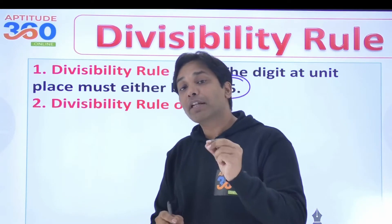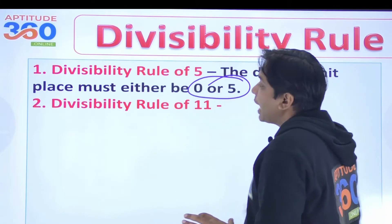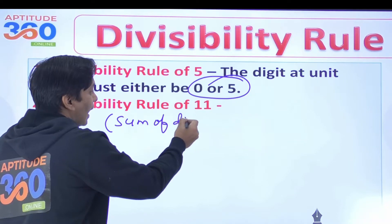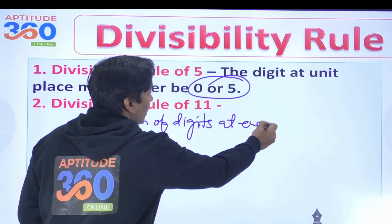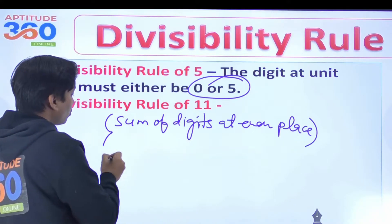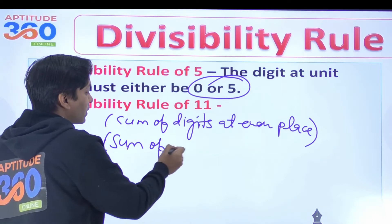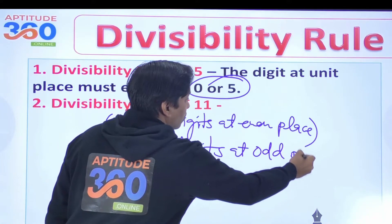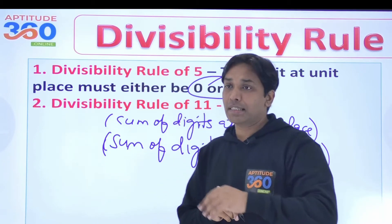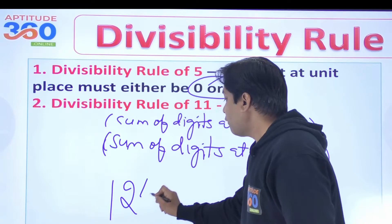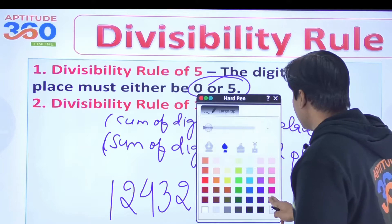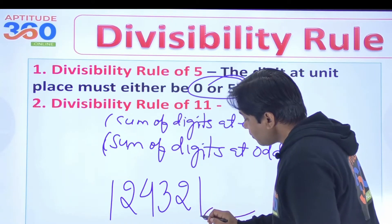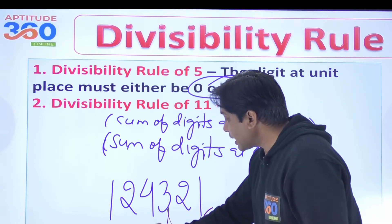Now the divisibility rule of 11 — pay close attention. You find the sum of digits at even places, and then the sum of digits at odd places. You start counting from the unit place as the first place. For example, take 1,2,4,3,2,1 — start from the unit place as position 1, then position 3 and position 5 are odd places, and positions 2, 4, 6 are even places.